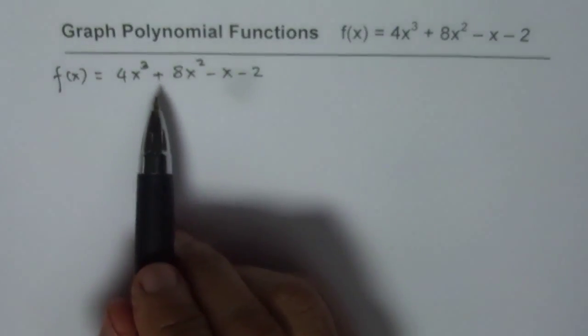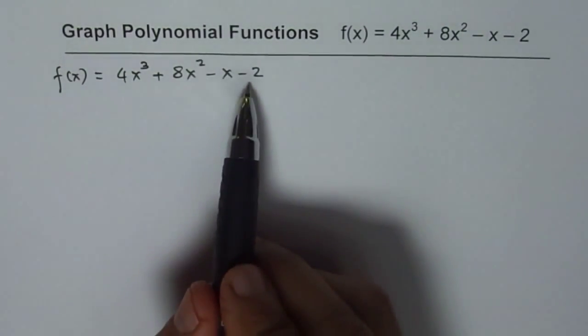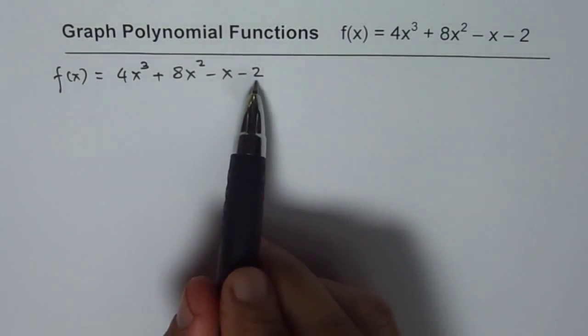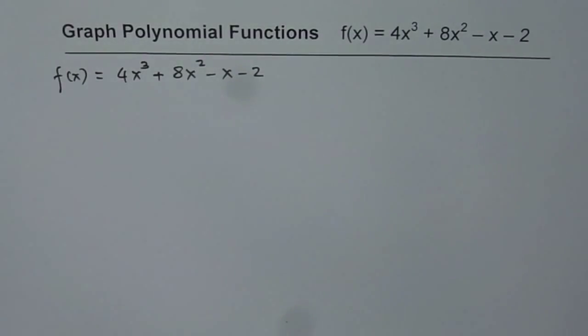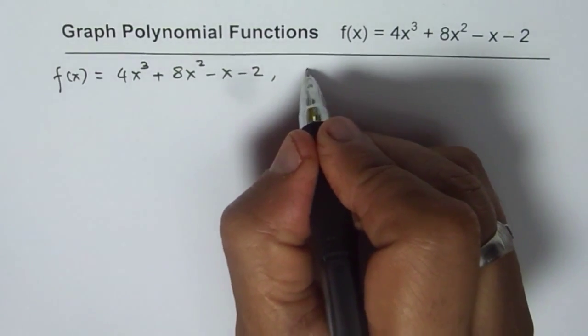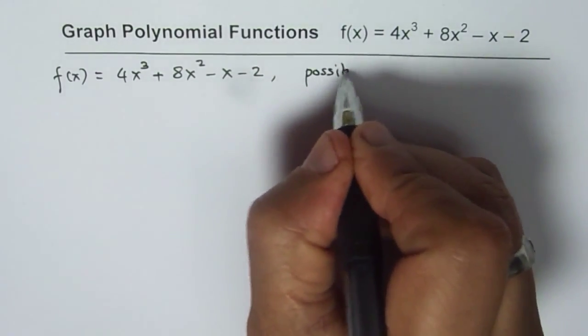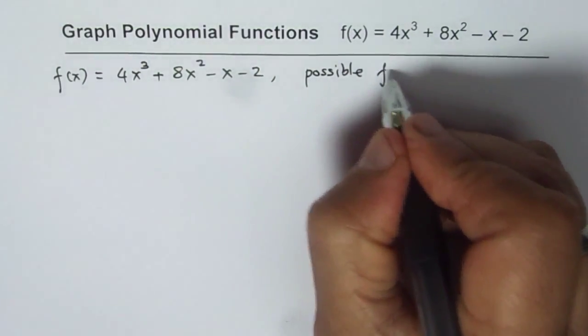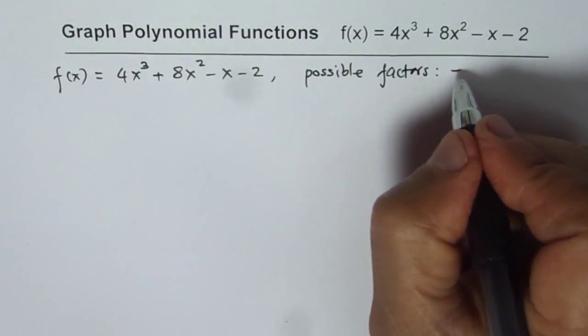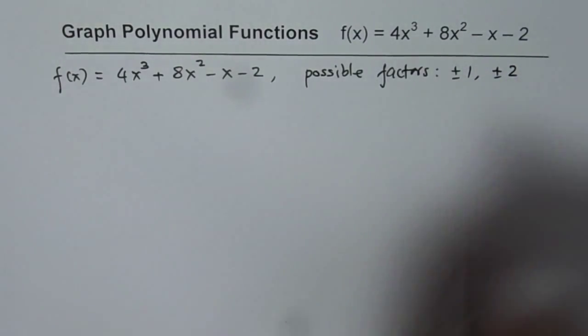So what are those numbers? The constant minus 2, all the factors of minus 2 are possible numbers which could be roots of this equation or which could lead to x-intercepts. The possible factors could be factors of minus 2 which are plus minus 1 and plus minus 2.